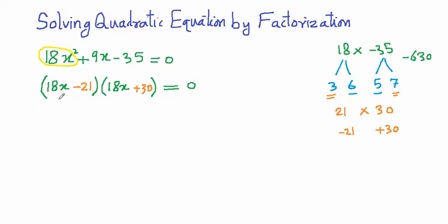We write -21 in one bracket and +30 in the other. However, since we wrote 18 extra — multiplying these two brackets would give 18²x² instead of 18x² — we need to divide both brackets by 18. We check: 18 and 21 are both divisible by 3, so we divide by 3.